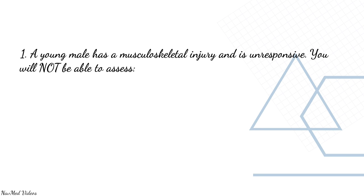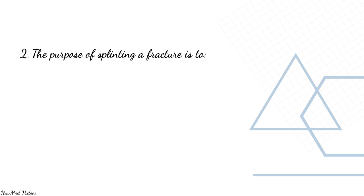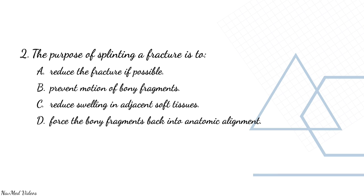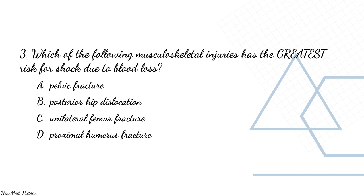Quiz: Q1 — A young male with a musculoskeletal injury is unresponsive. You will not be able to assess: skin integrity, distal pulses, capillary refill, or sensory and motor function. Correct answer: D — sensory and motor function cannot be assessed without the patient being awake. Q2 — The purpose of splinting a fracture is: reduce the fracture, prevent motion, reduce swelling, or force fragments into anatomical alignment. Answer: B — prevent motion of bony fragments. Q3 — Which musculoskeletal injury has the greatest risk for shock due to blood loss: pelvic fracture, posterior hip dislocation, unilateral femur fracture, or proximal humerus fracture? Answer: A — pelvic fracture.